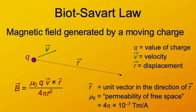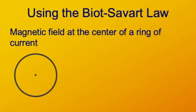We can use the Biot-Savart law to figure out magnetic fields in real situations. Let's look at one example where we can actually apply it: a ring of current. We imagine current flowing continually around the ring — this is not too unrealistic, we can make systems quite similar to this. We'll use the Biot-Savart law to find the magnitude and direction of the field at the center of this ring, defining the current I and the radius R of the circle.